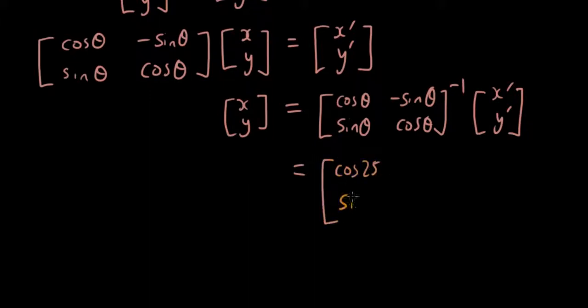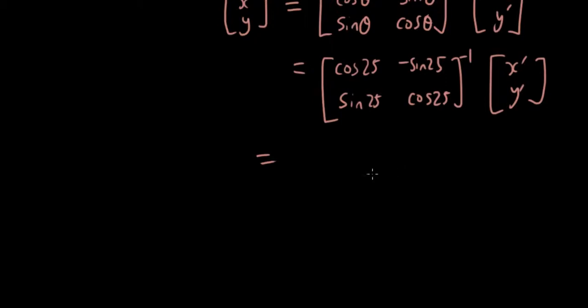Cos 25, sin 25, negative sin 25, cos 25, inverse times x' y'. Now if you guys remember how to get the inverse of the matrix, you can just type it into a graphics calculator, but what you do is you get 1 over a times d, so cos 25 times cos 25, minus b times c, so sin 25 times negative sin 25, and that will give us 1 over cos 25 squared plus sin 25 squared.